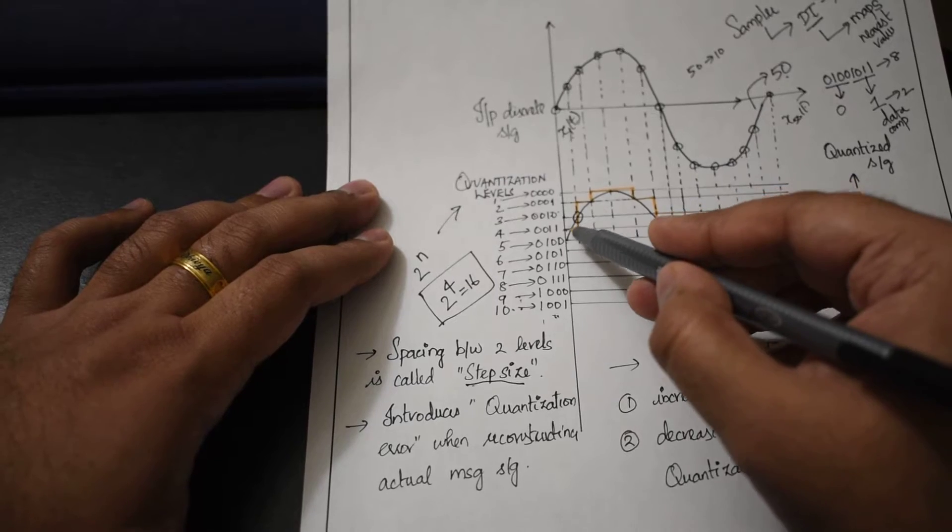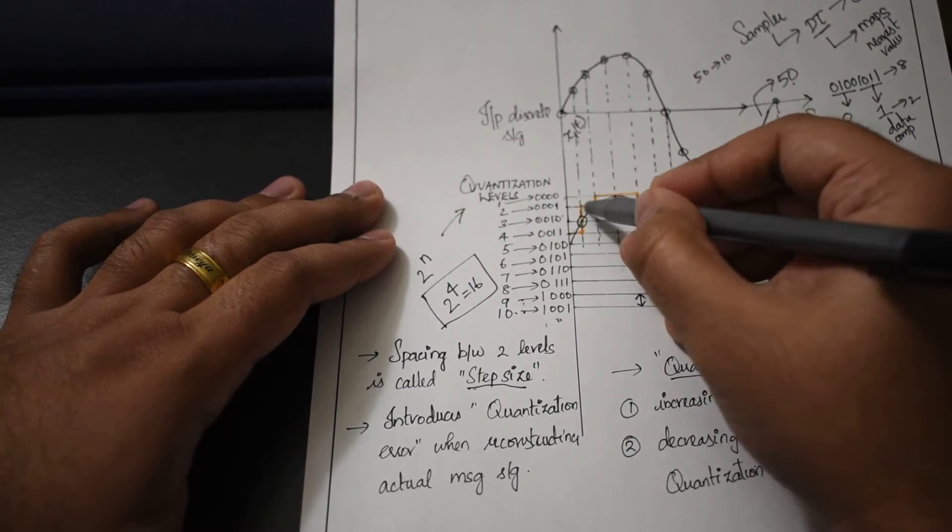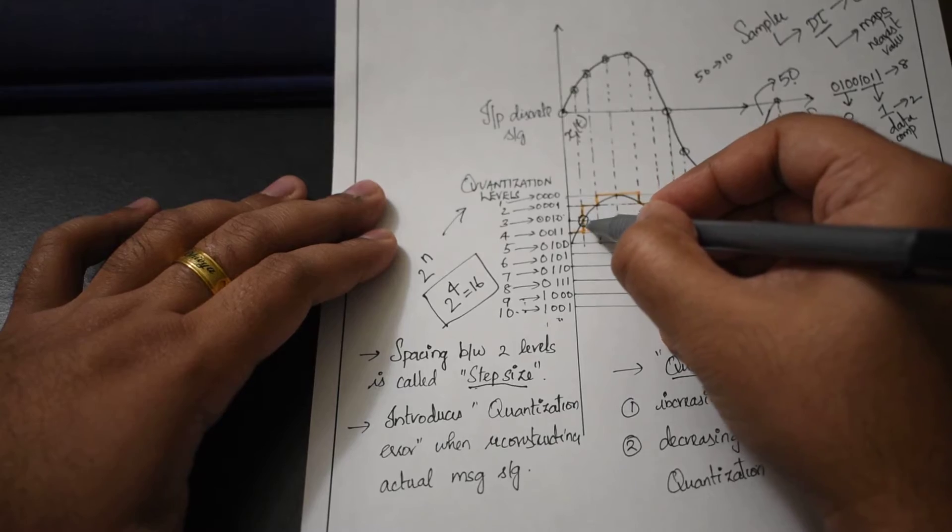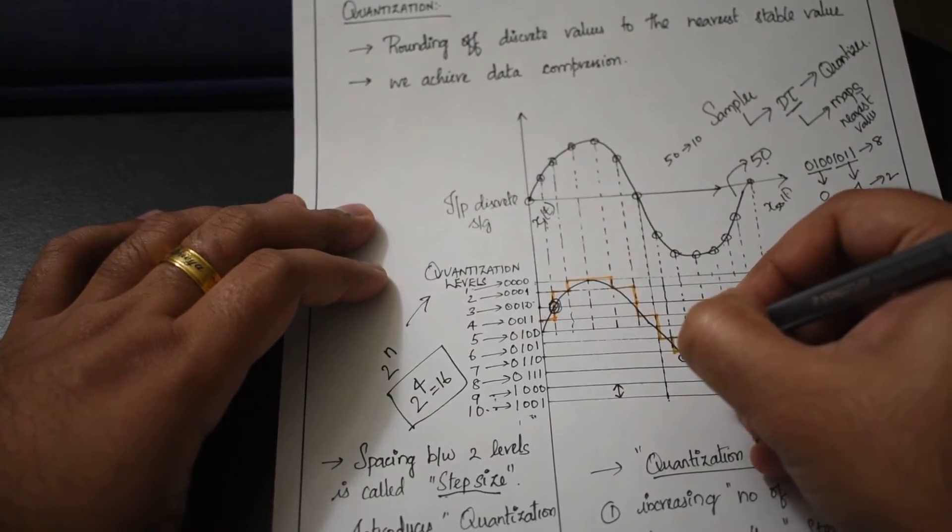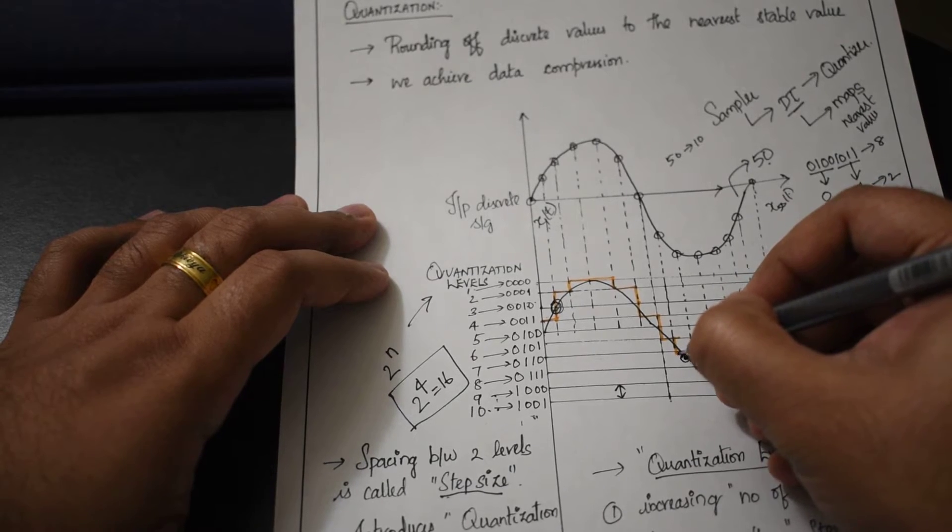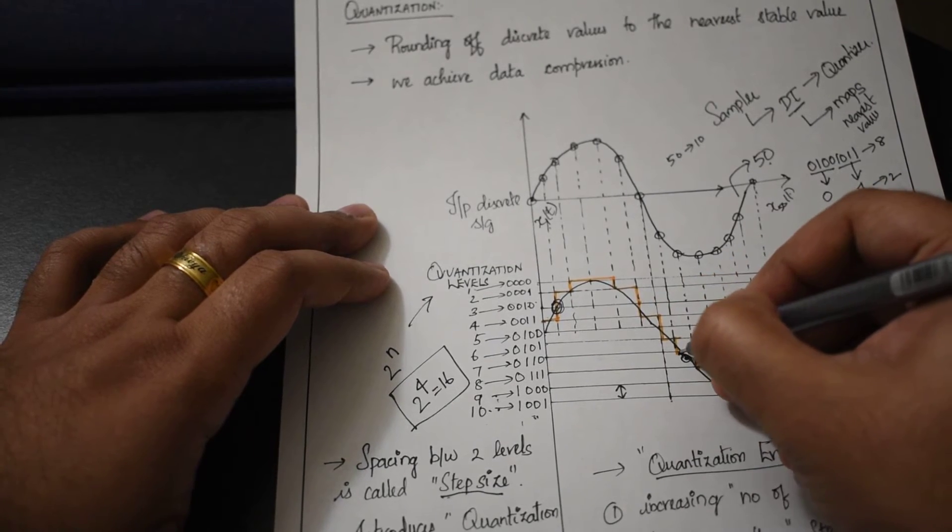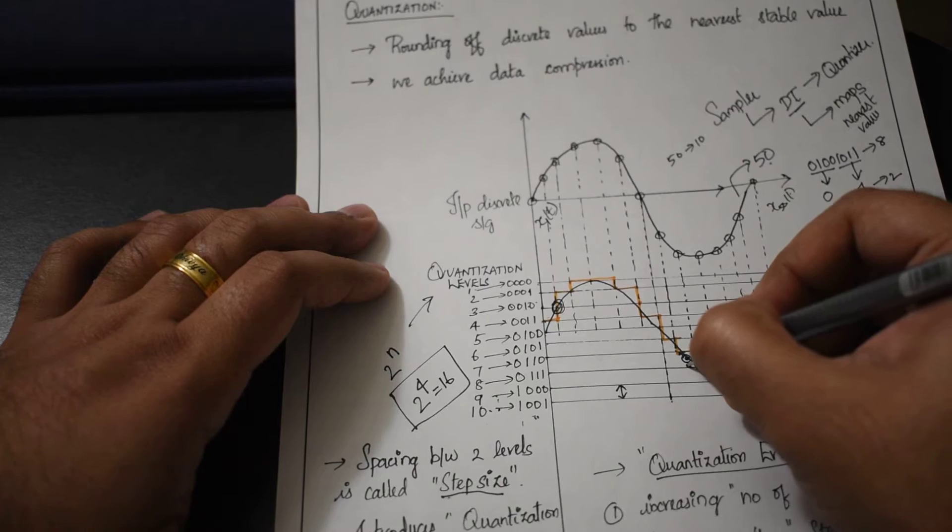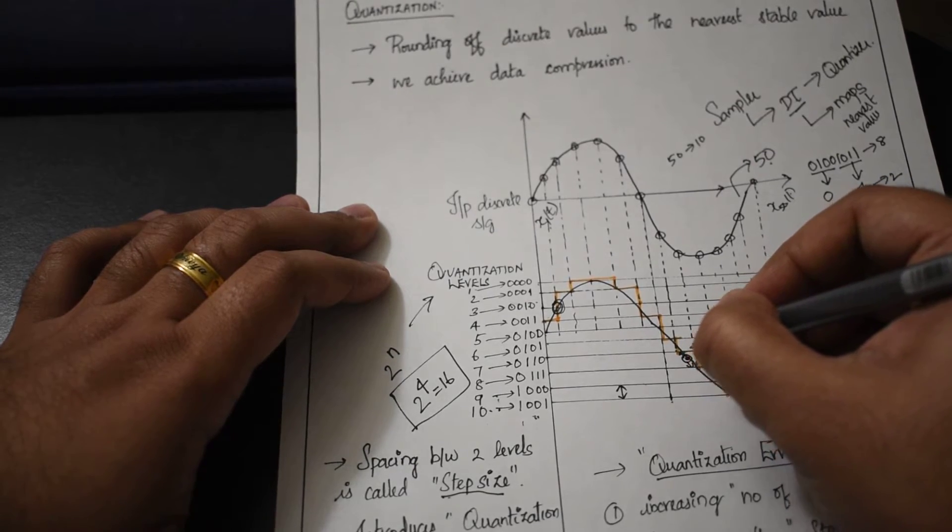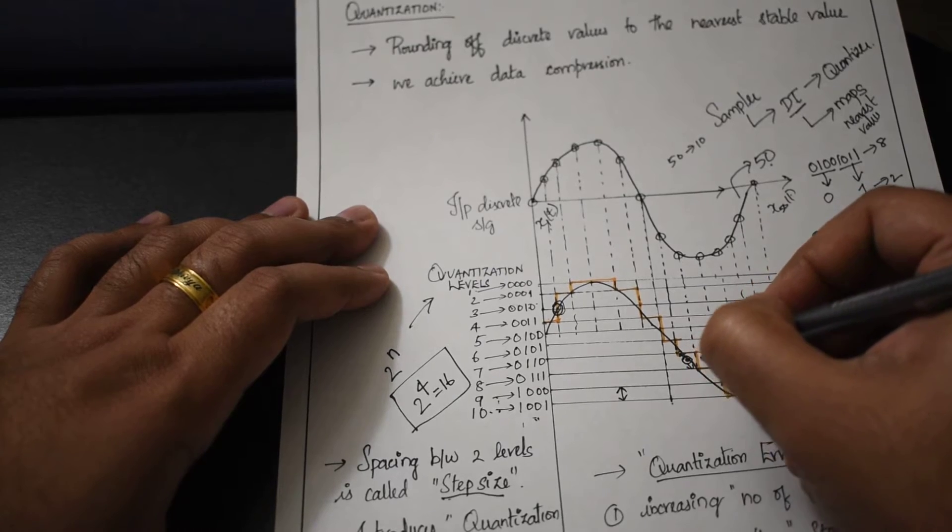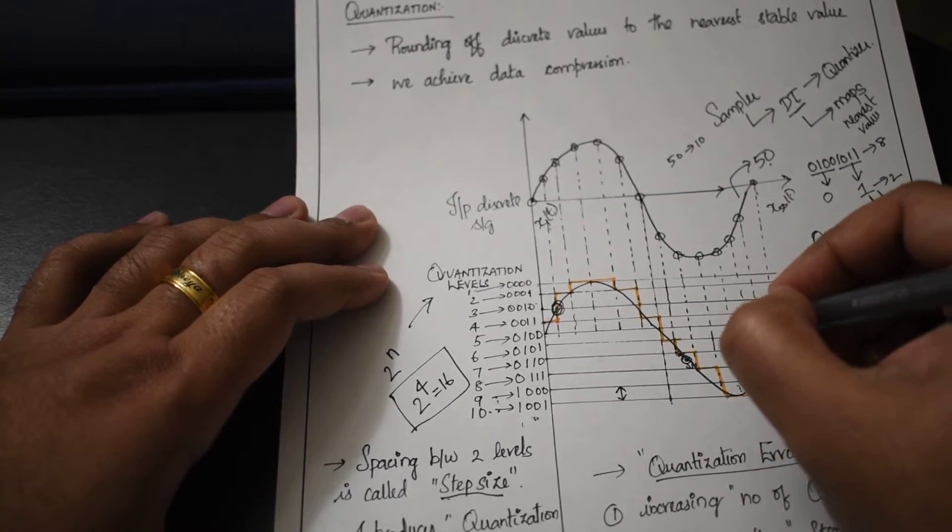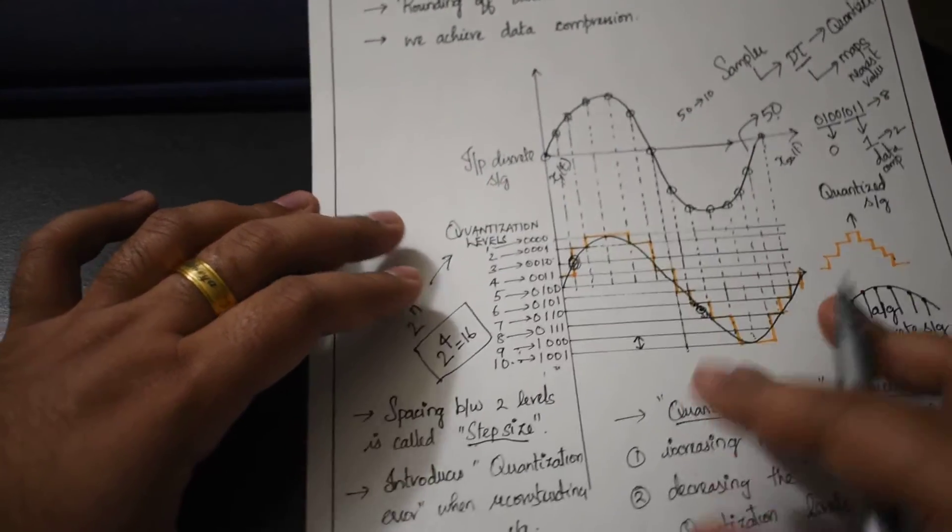Because of the estimation we do, we're estimating the signal to be closer to a certain level. What if a signal is in between levels? Whichever is closer - level 6, 7, or 8 - we consider that value. Because we're making this estimation, this introduces error called the quantization error.